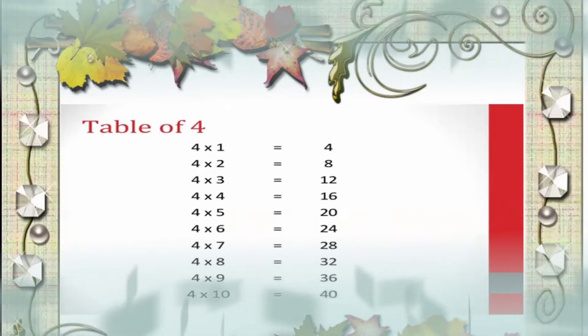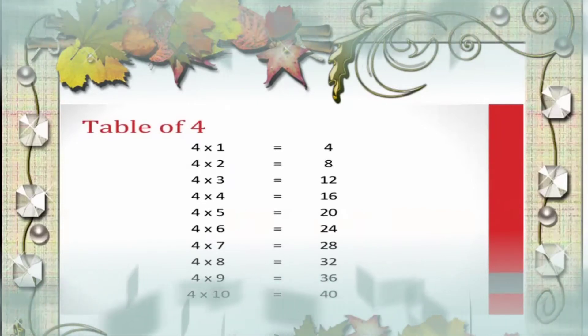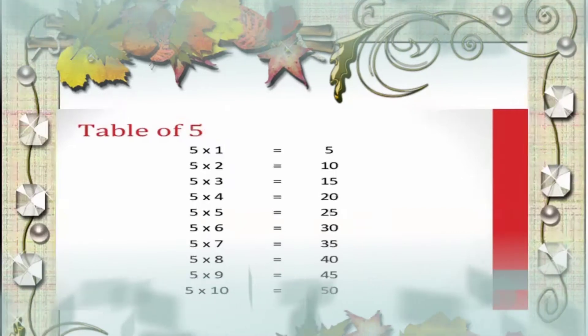Let us repeat. 4 7's are 28, 4 8's are 32, 4 9's are 36, 4 10's are 40.